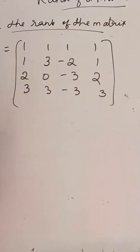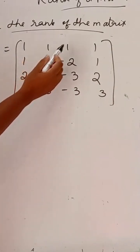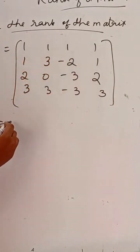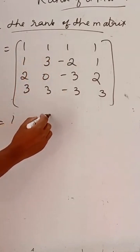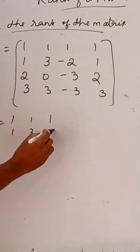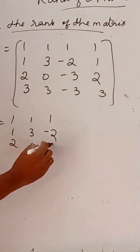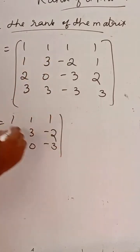So, next we have to find the determinant of the 3 by 3 matrix. The first 3 by 3 matrix is this one: 1 1 1, 1 3 minus 2, 2 0 minus 3.